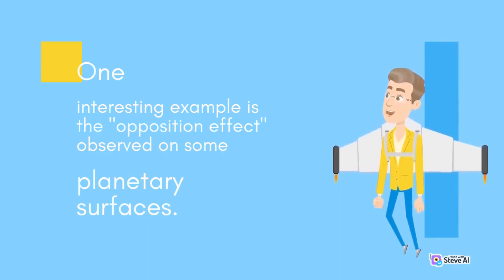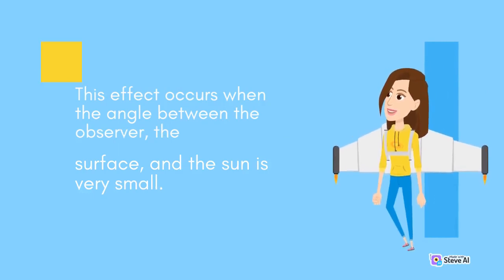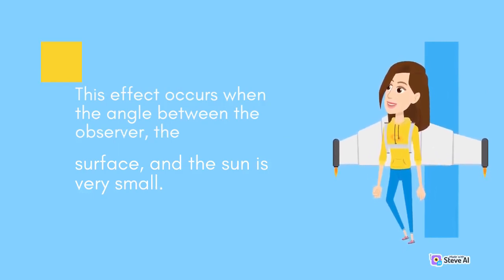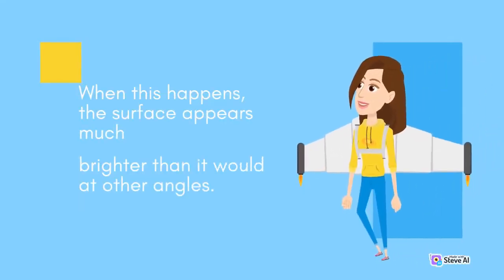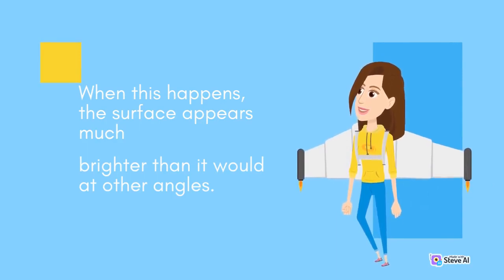This effect, observed on some planetary surfaces, occurs when the angle between the observer, the surface, and the Sun is very small. When this happens, the surface appears much brighter than it would at other angles.